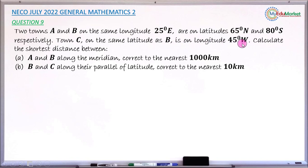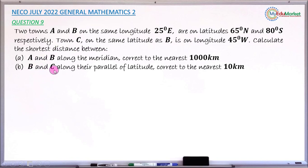Town C is on longitude 45 degrees west. Question (a) asks to calculate the shortest distance between town A and town B along the meridian, giving the answer to the nearest thousand kilometres. Question (b) asks to find the shortest distance between town B and town C along their parallel of latitude, giving the answer to the nearest 10 kilometres.